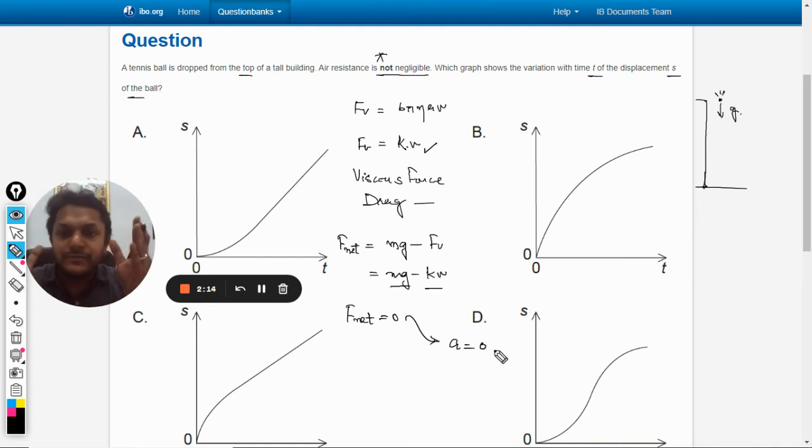And the displacement-time graph will become a straight line. So according to that theory, I can say that up to some time, up to some moment, the acceleration will take place. Whatever it is, acceleration will take place.